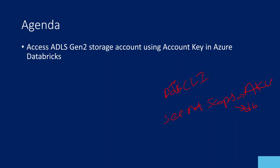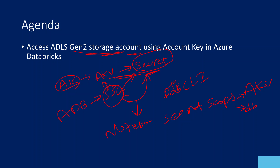In this video there are a couple of steps. First, since I want to access the ADLS Gen2 account using the account key, I will take the account key from the storage account, store it in Azure Key Vault as a secret, then create a secret scope in Azure Databricks backed by Azure Key Vault to access that secret and connect to the ADLS Gen2 account.